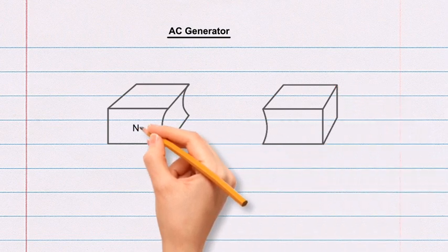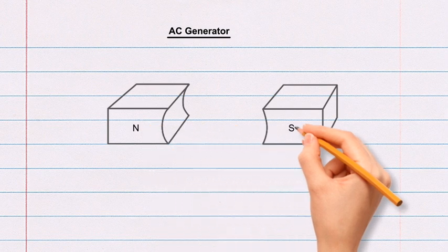Name the left-hand side of the rectangular box as N, which represents the north pole of the magnet. And name the right side of the rectangular box as S, which represents the south pole of the magnet.